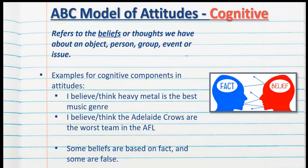The C, cognitive, refers to the beliefs or thoughts that we have about an object, person, group, event or issue. Examples for cognitive components may be: I believe heavy metal is the best music genre, or I think that the Adelaide Crows are the worst team in the AFL. It is easy to confuse C and A of this model — remember, cognitive is the thoughts and beliefs, whereas A is the feelings and emotions. Now, some beliefs are based on fact and some are false. The Adelaide Crows are actually not the worst team in the AFL at the moment — they are not at the bottom of the ladder. So this belief is not based on fact; however, it still contributes to my negative attitude towards the Adelaide Crows.